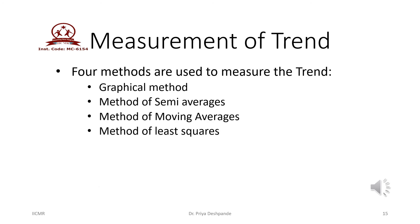There are basically four methods used for measurement of trend. The first is the graphical method, second is the method of semi averages, third is the method of moving averages, and the fourth is the method of least squares. All these methods will be seen one by one in the next video lecture series.